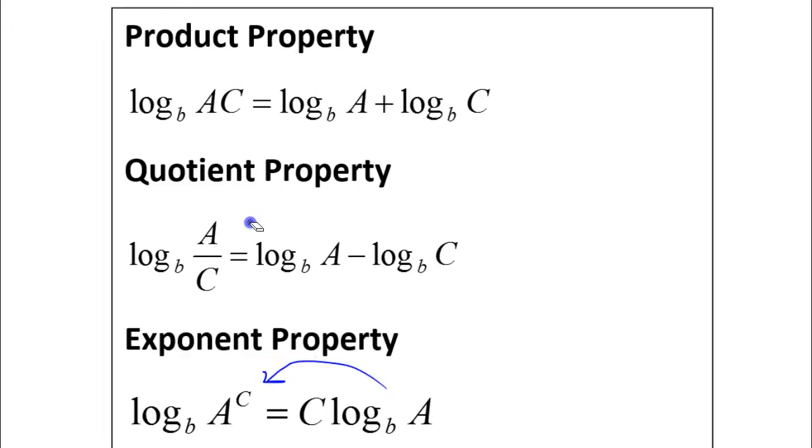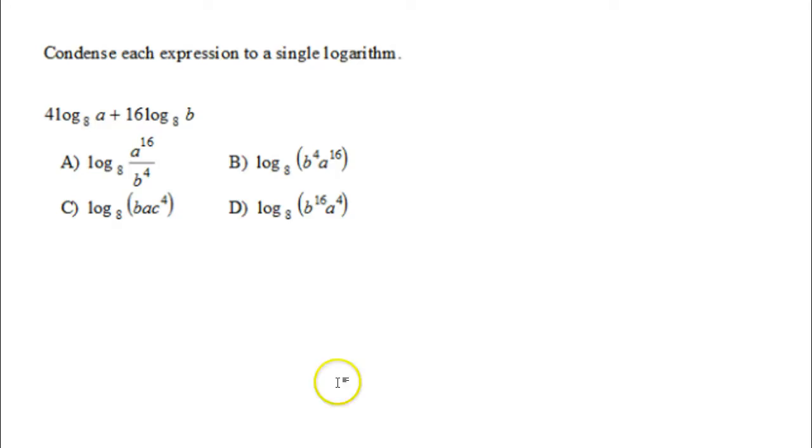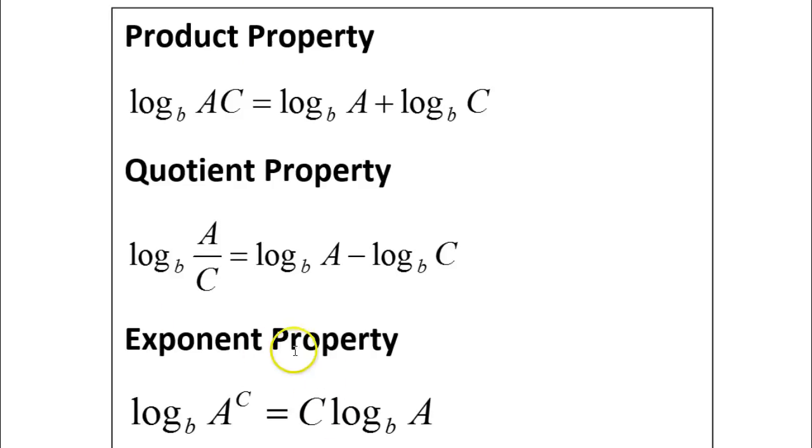So we're being asked to condense. We're moving this way. Let's see which property we're going to use. I think we're going to use two properties here. First of all, any time you see numbers in the front, you should be thinking about the exponent property, which has a number in the front, and according to the exponent property, that's the same thing as taking that and putting it up into the exponent.